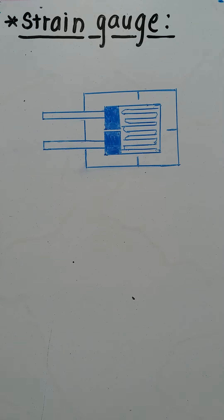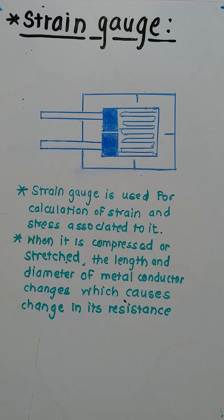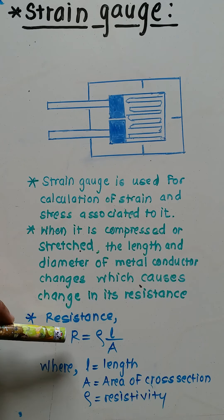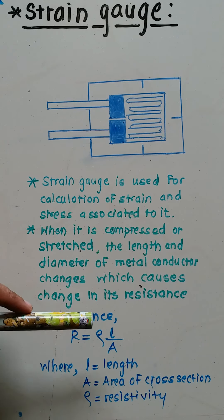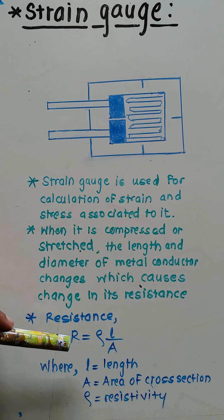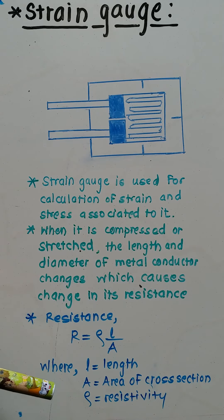When a strain gauge is stretched or compressed by external force, then its length and diameter changes which causes change in its resistance. In current electricity we have studied that resistance of conductor depends upon length and area of cross section of conductor. The resistance formula is R = ρL/A where ρ is resistivity of that conductor.